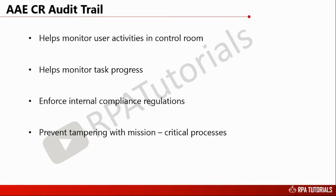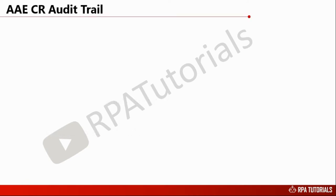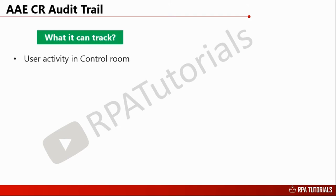Though it provides you with important data, it does not track anything and everything. Let us first have a look at what it tracks. Any user activity in the control room — like logging into and out of the control room, running and scheduling tasks, adding, deleting, or modifying roles.